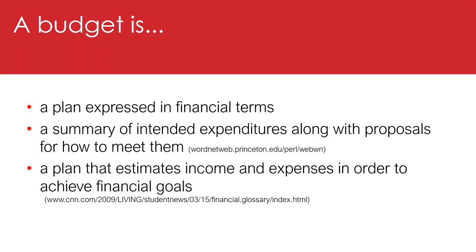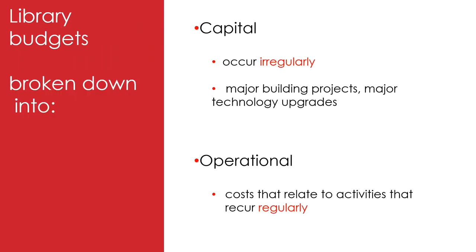Reporting and accountability requirements for different types of libraries are linked to their different funding sources. In schools, reporting requirements may differ according to whether it is a state, Catholic or independent school, and it may even differ between schools depending upon the principal and the business manager.